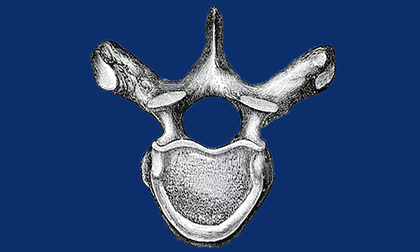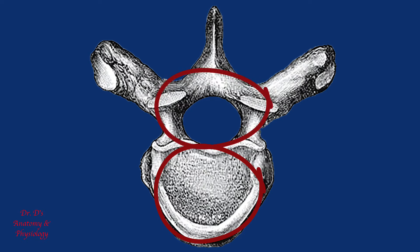In the previous video we talked about the two basic parts of the vertebra, which are the body, also known as the centrum, and the vertebral arch, also known as the neural arch. This video will concern the processes that are going to be found extending from the vertebrae.